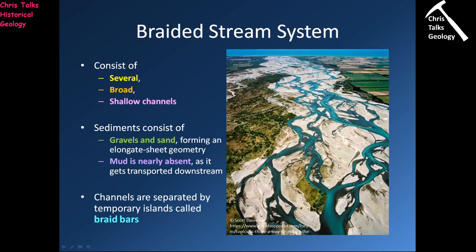The channels are separated by islands called braid bars — you can see a nice example here. Braid bars have very little vegetation compared to the surrounding land because they're made mostly of gravels and cobbles — poorly consolidated material in an environment of fast, powerful rivers. Braid bars are eroded and destroyed on a regular basis, with new ones forming in their place, which is why the braid bars visible here aren't heavily vegetated: vegetation doesn't have enough time to establish itself.